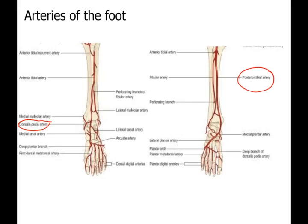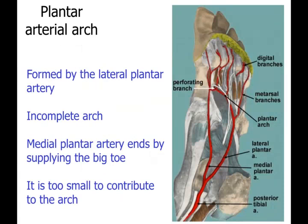The posterior tibial artery coming through the posterior compartment divides into the medial plantar artery and the lateral plantar artery. The medial one is small and the lateral one is the main one. The lateral plantar artery forms the plantar arch - mostly an incomplete arch as the medial plantar artery is too small to contribute. From the lateral plantar artery the plantar arterial arch is formed, giving digital branches as in the upper limb.